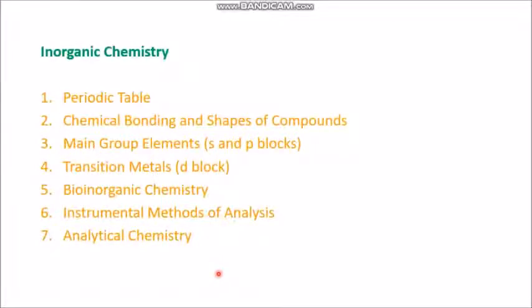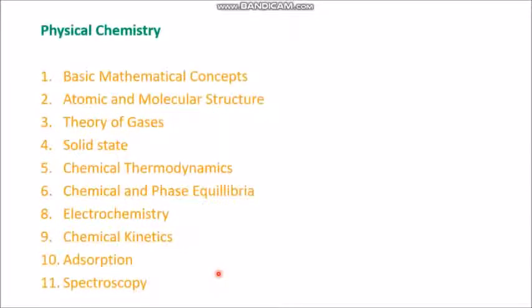From the inorganic chemistry, you have to do periodic table, chemical bonding and shapes of compounds, main group elements S and P blocks, transition metals D blocks, bioinorganic chemistry, instrumental methods of analysis and analytical chemistry. So seven chapters.